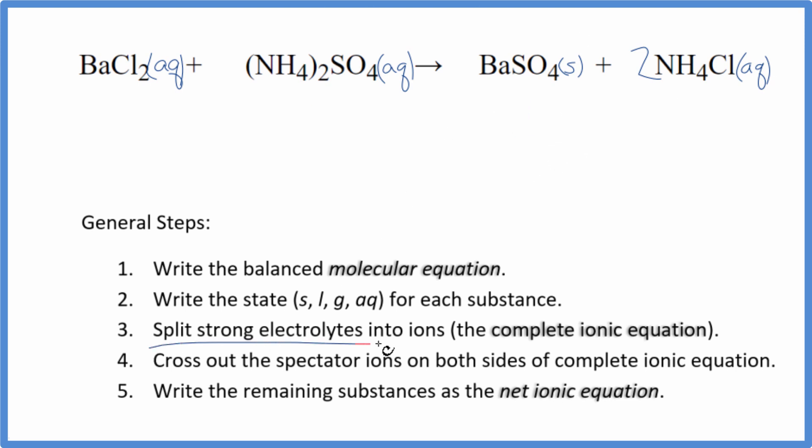Now we can split the strong electrolytes into their ions for the complete ionic equation. Barium is in group two on the periodic table - they have a two-plus ionic charge. Chloride ion is one minus. So I have Ba2+, the barium ion. I'll write the states at the end. Let's not do that now. Two chloride ions.